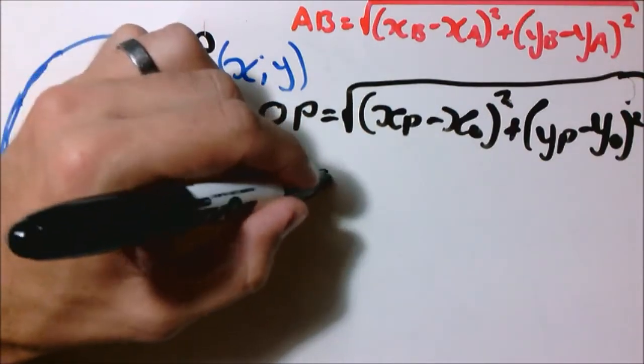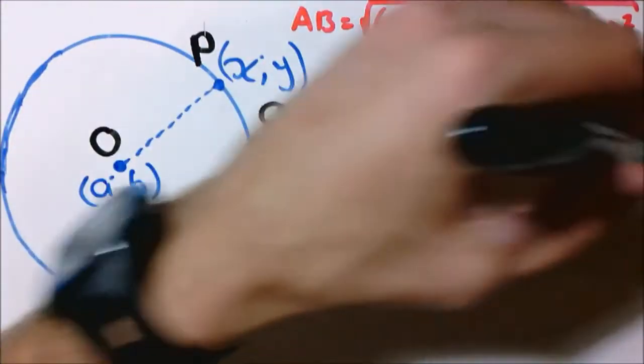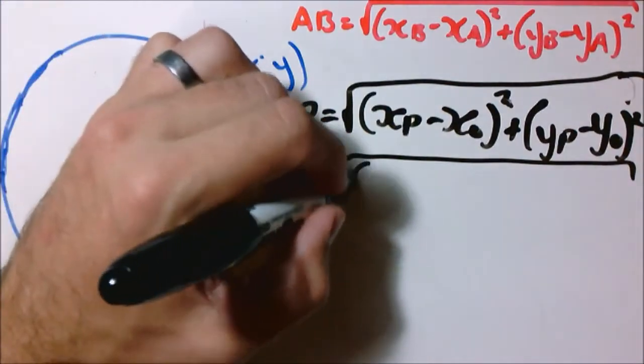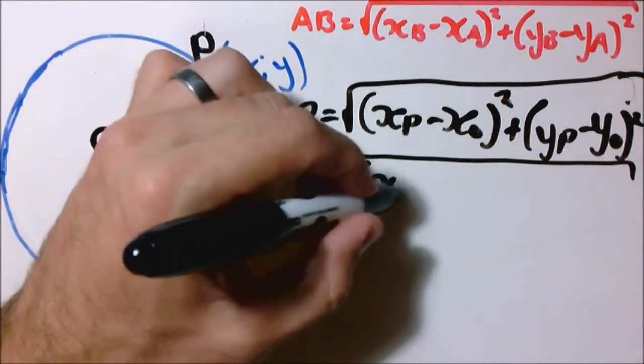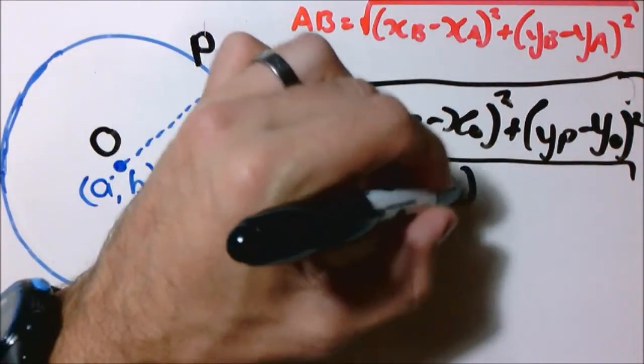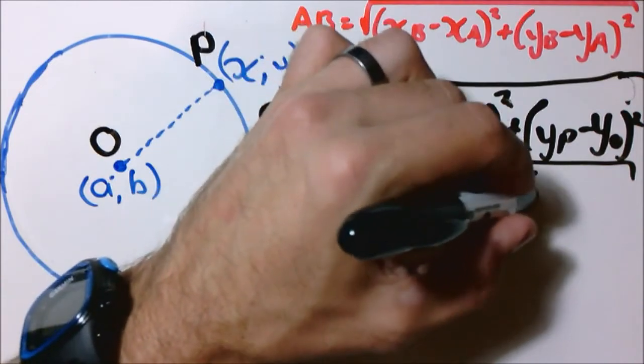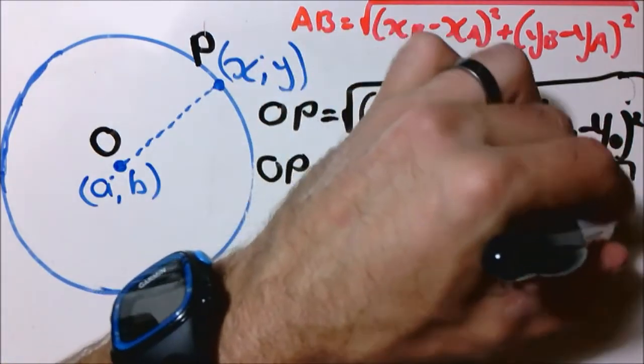Now we do our substitution. OP equals square root bracket, you will notice it's X minus A bracket square plus bracket Y minus B bracket square.